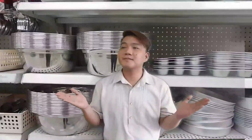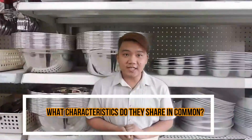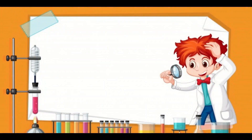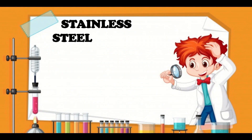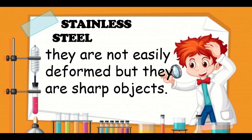Let us observe these examples. What characteristics do they share in common? Very good! They are stainless steel. They are not easily deformed, but they are sharp objects.